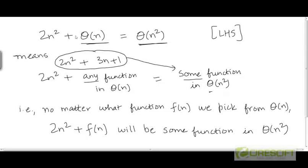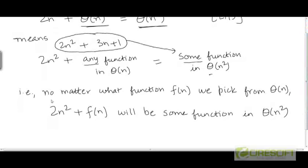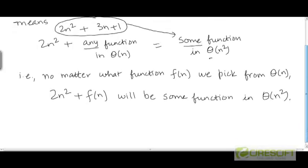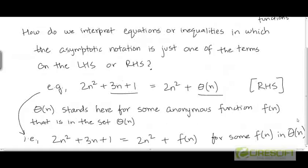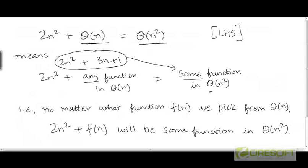So I can pick any function from this set and the result will be some function in this set. No matter what function f(n) we pick from big-theta of n, 2n-squared plus f(n) is going to be some function in big-theta of n-squared. This is how we read the theta notation when it appears as one of the terms in an equation or in an inequality.